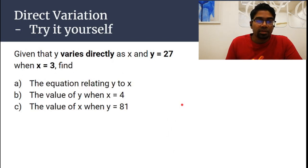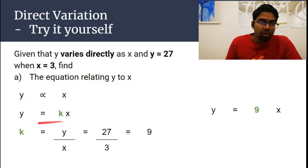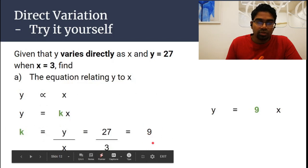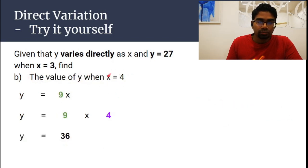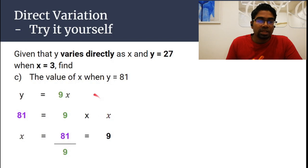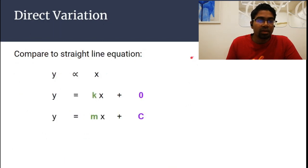Pause the video and try this question yourself — it's the same style. The equation relating y to x is y equals kx; finding k gives 9, so y equals 9x. For part b, substituting x equals 4 gives y equals 9 times 4, which is 36. For part c, find x when y is 81: substitute into y equals 9x, so x equals 81 divided by 9, which is 9.